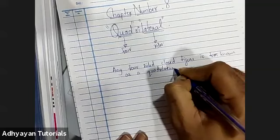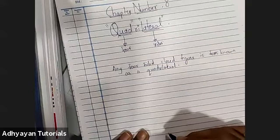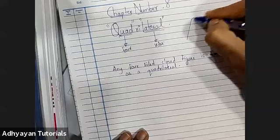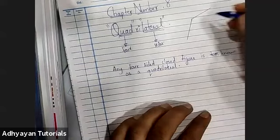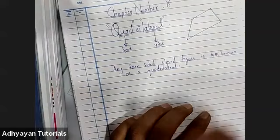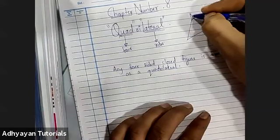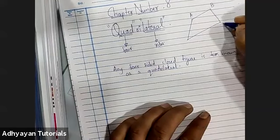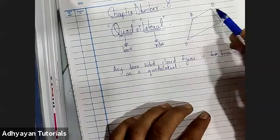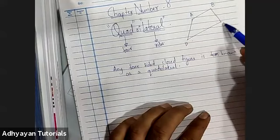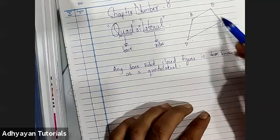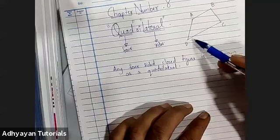I hope everybody has understood the definition of a quadrilateral. Let us draw a quadrilateral — we just need four sides to form a closed figure, something like this. I named this quadrilateral as A, B, C, D. It has four sides: AB, BC, CD, and AD. It has four angles: angle A, angle B, angle C, and angle D.